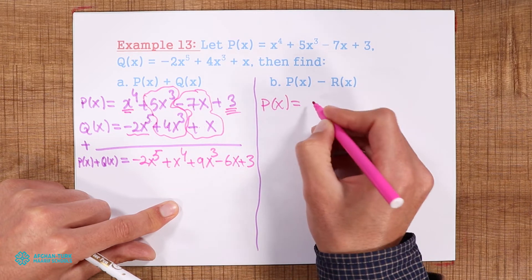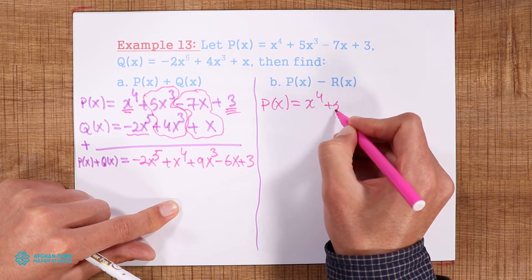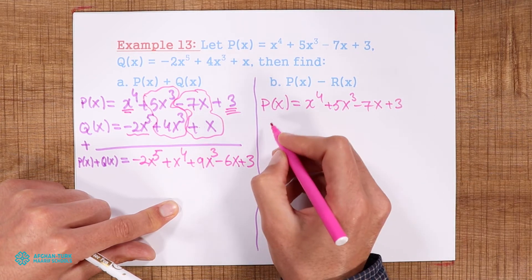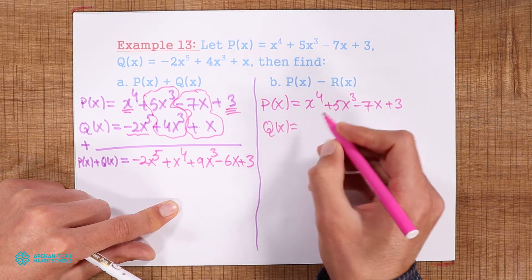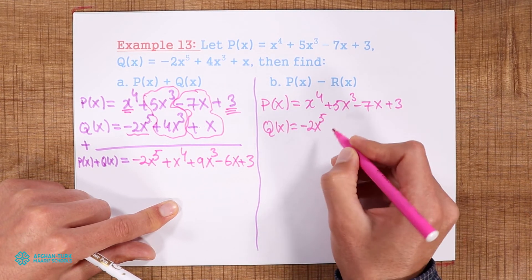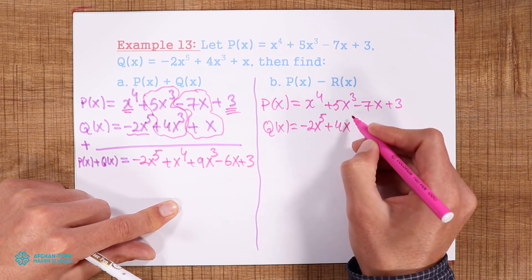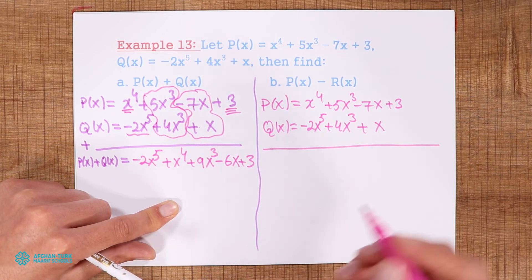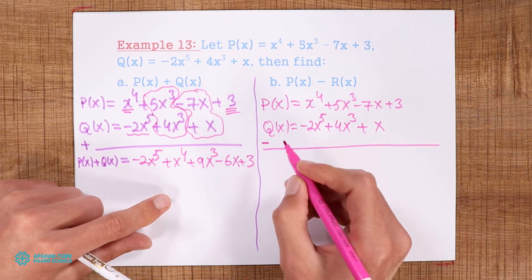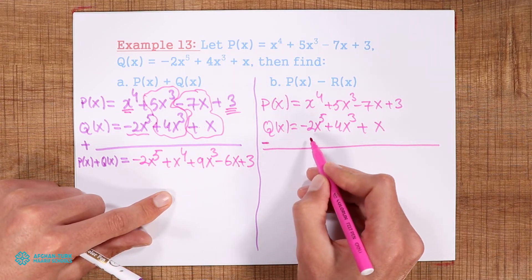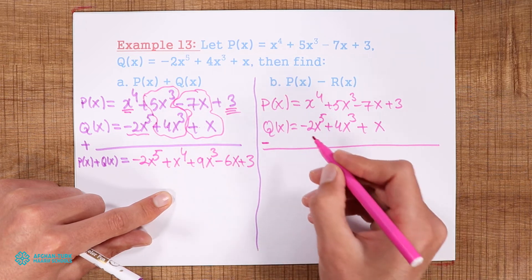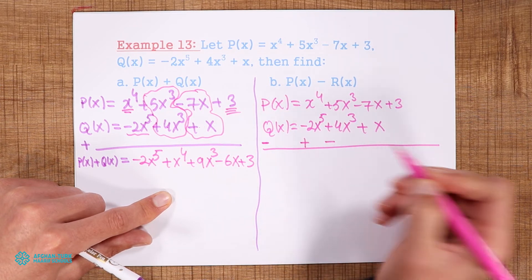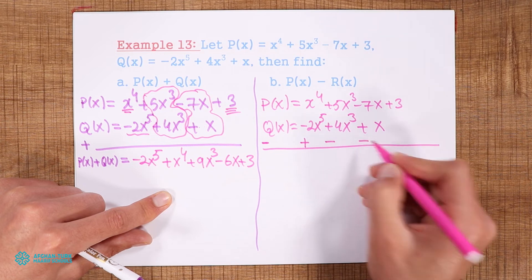For subtraction, we write p(x) = x⁴ + 5x³ - 7x + 3, and q(x) = -x⁵ + 4x³ + x. To find the difference of these two polynomials, you must change all the signs of the second polynomial. So minus becomes plus, plus becomes negative, and positive becomes negative.